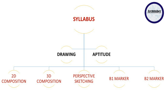Let us start with the PPT of the syllabus and discuss in detail what topics to study. Talking about the syllabus, we have Part A and Part B. Part A has your drawing and Part B has aptitude. We are discussing Part A, which is drawing, and it has 2D composition, 3D composition, and perspective sketching.